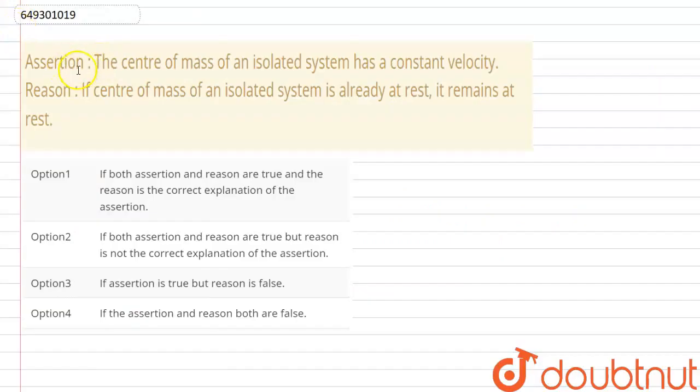Hello students, we have an assertion and reason question. The assertion is: the center of mass of an isolated system has a constant velocity. The reason is: if the center of mass of an isolated system is already at rest, it remains at rest.